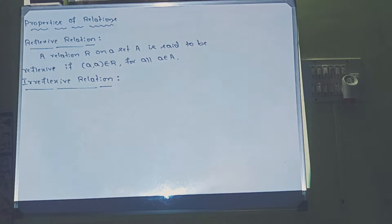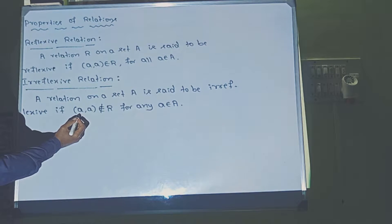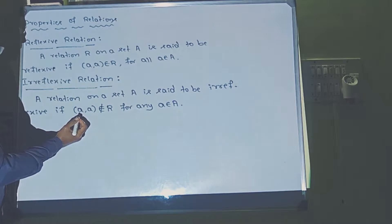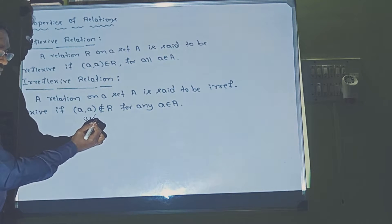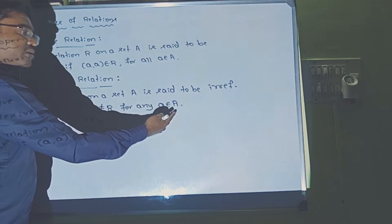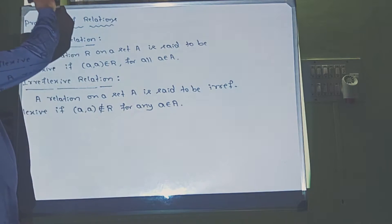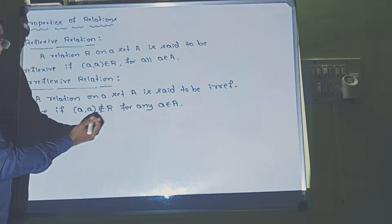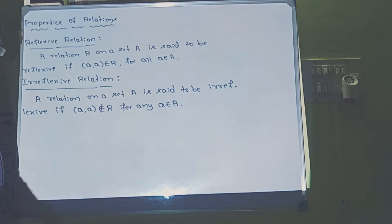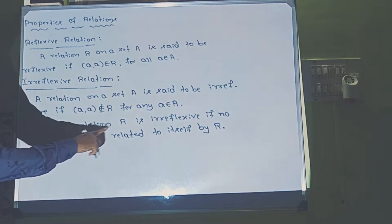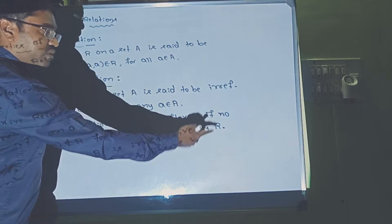What do we mean by irreflexive? A relation R on a set A is said to be irreflexive if A is not related to A — that means (A, A) does not belong to R for any element A belonging to A. No element is related with itself. The relation R is said to be irreflexive if no element of A is related with itself by R.